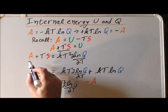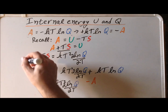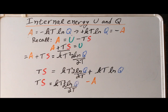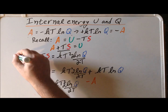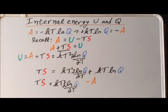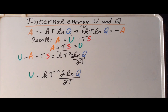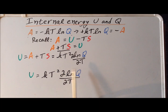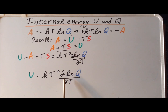Therefore, since we have A plus TS here, we can replace this simply as the internal energy U. This gives us our desired result — the relationship between the internal energy U and the canonical ensemble partition function Q: U is equal to KT² times the derivative of the natural log of Q with respect to T.